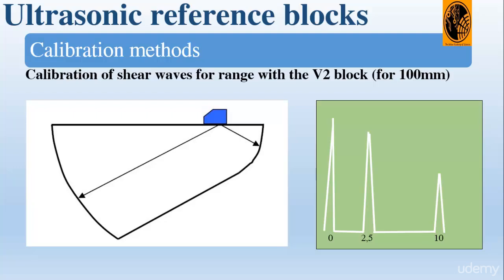We place the probe on the block and point it at the 25 millimeter arc. We adjust the delay and range controls until we have two signals on the screen — the first representing 25 mm and the second representing 100 mm. We maximize the signals by sliding the probe forward and backward, then adjust the range and delay until the first echo comes one quarter of the way across the screen at 2.5 and the second echo comes at the extreme edge of the screen. The time base now represents 100 mm. To verify, turn the probe around and point it at the 50 mm arc — if calibrated correctly, the signal will come exactly in the middle of the screen at position 5.